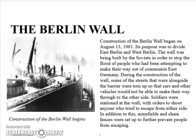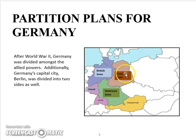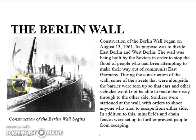The construction of the Berlin Wall began on August 13, 1961. Its purpose was to divide East and West Berlin. The wall was built by the Soviet Union to stop the flood of people attempting to leave communist East Germany. Streets alongside the barrier were torn up so vehicles could not pass through. Soldiers were stationed at the wall with orders to shoot anyone who tried to escape, and minefields, chain fences, and electric fences were set up to further prevent people from escaping. So one side of the wall was the capitalist side and the other was the communist side.